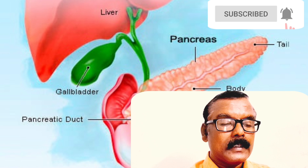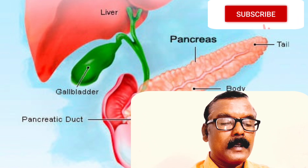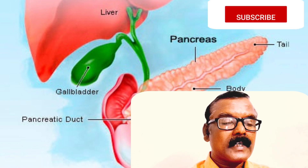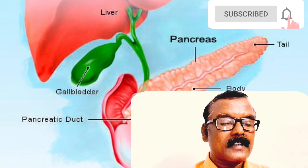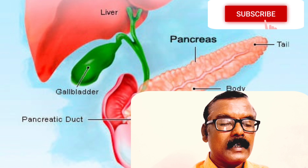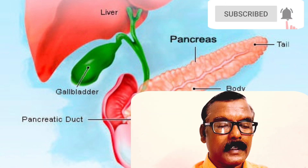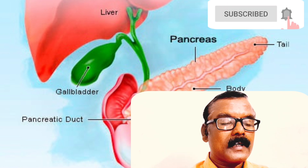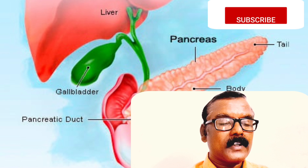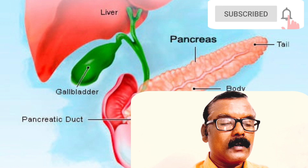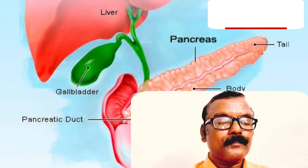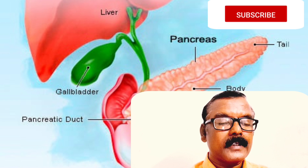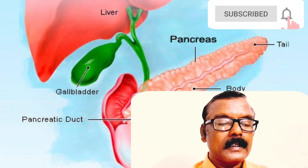Treatment for hereditary pancreatitis aims to control pain and replace lost enzymes. Genetic testing is available for patients who may be at risk. Pancreatic cancer can develop in the pancreas. The exact cause is often unknown, but it is often linked to smoking or heavy drinking. Other risk factors include diabetes, chronic pancreatitis, liver problems, and stomach infections. Symptoms include pain in the upper abdomen as the tumor presses against nearby nerves.